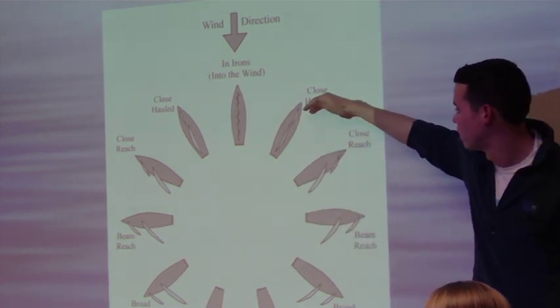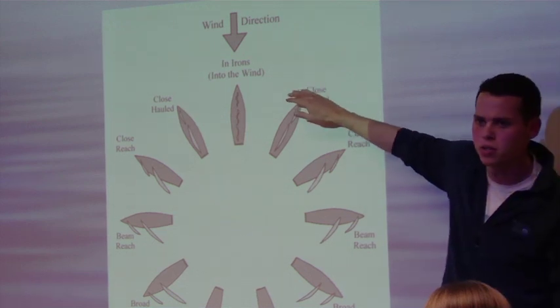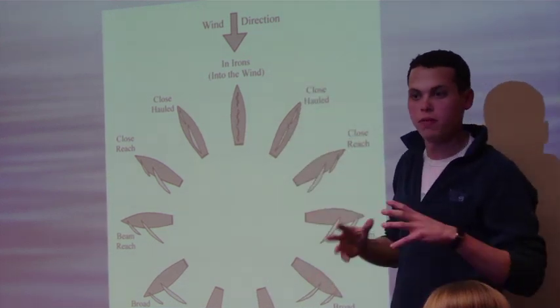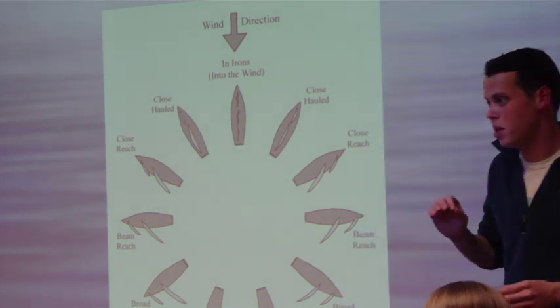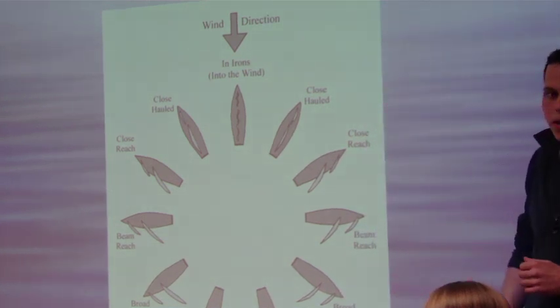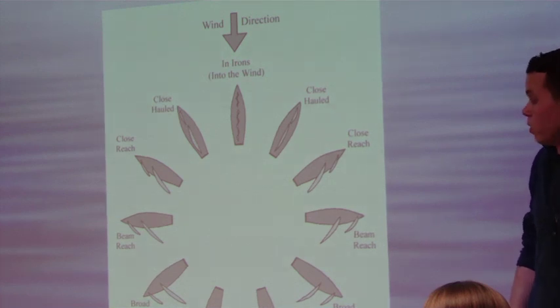Then we can fall off onto a close reach. Actually, quickly to go back to close haul, 45 degrees is a rough estimate. Some boats will be able to get closer to the wind. Other boats, not so close. So just keep in mind that's going to be a rough estimate of what the actual degree or angle is to the wind.